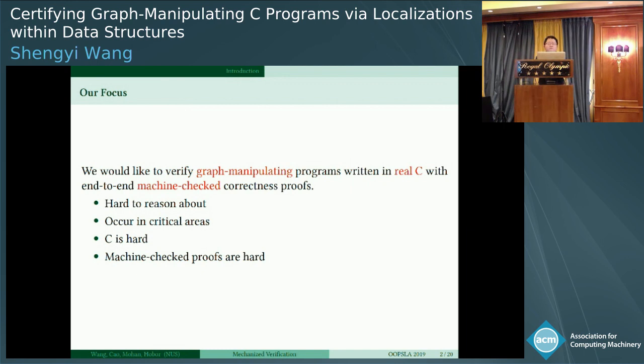There are several difficulties about this task. First, graph algorithms are hard to reason about, but they are widely used in many critical areas. The second difficulty is that the C program language is hard. It contains some subtle semantics in some places. As an end-to-end machine checked proof, we have to handle all those subtle semantics properly. The last difficulty comes from the machine checked proofs themselves. They are merciless and lengthy, so we want to reuse the code.